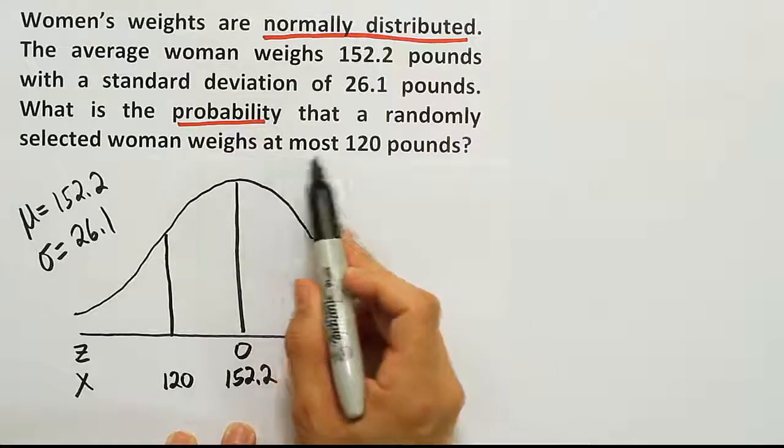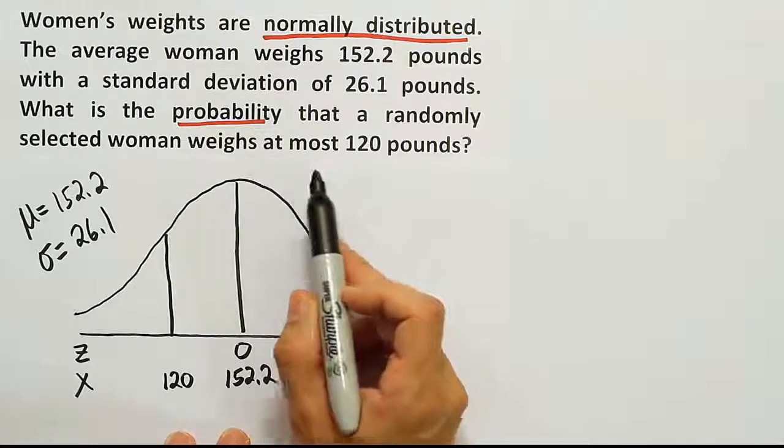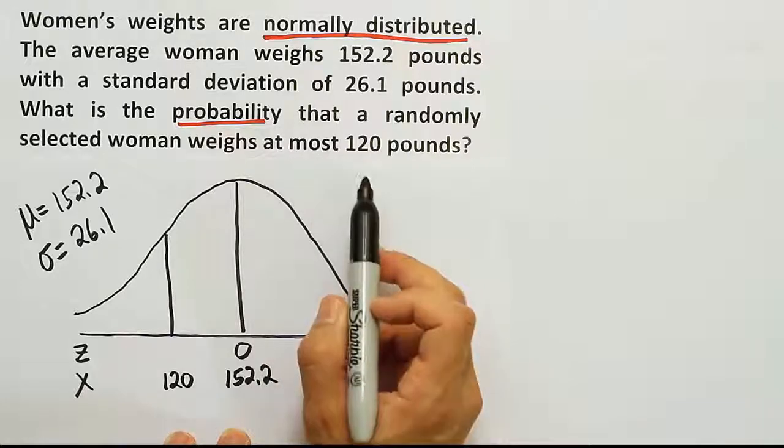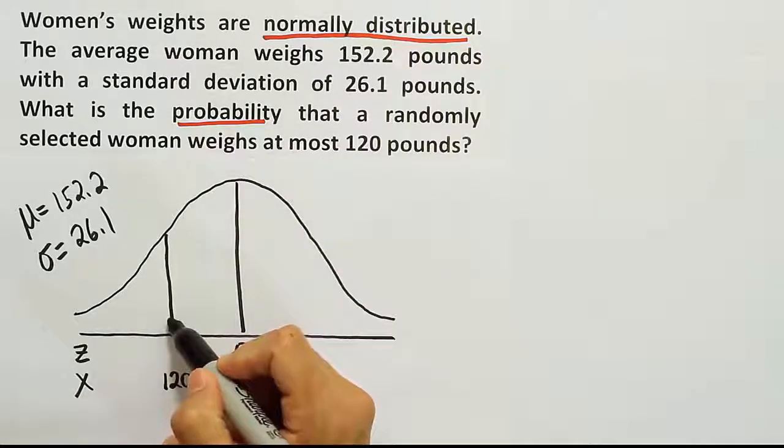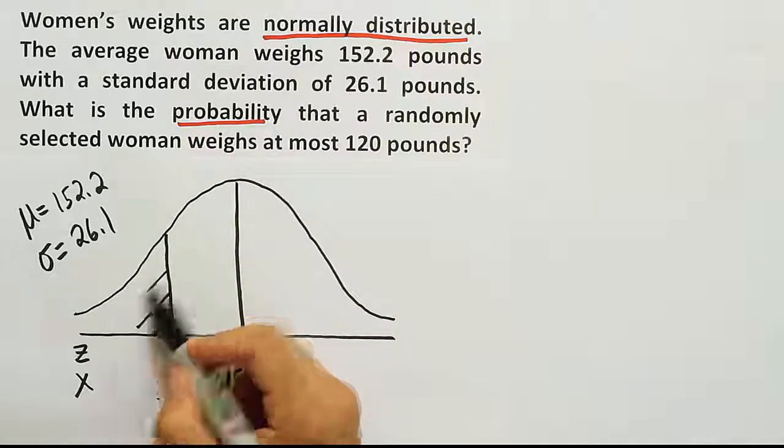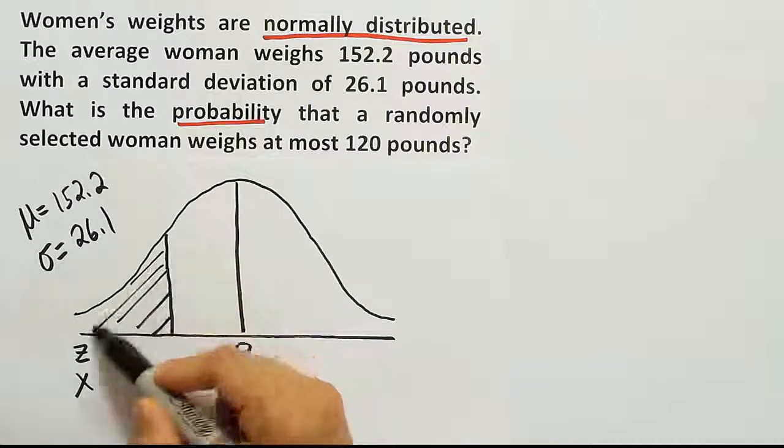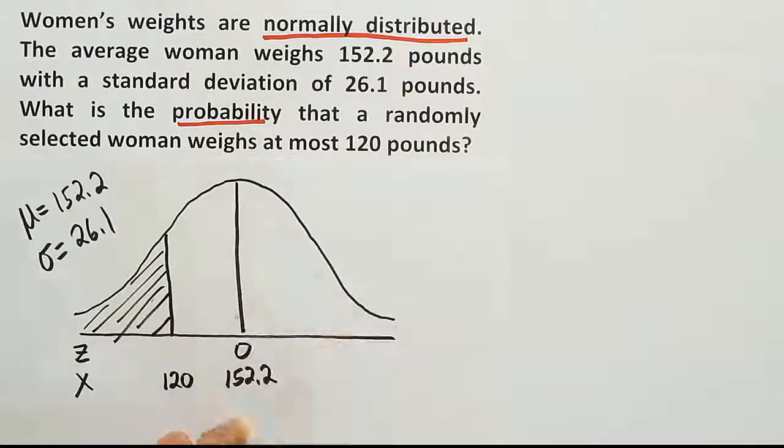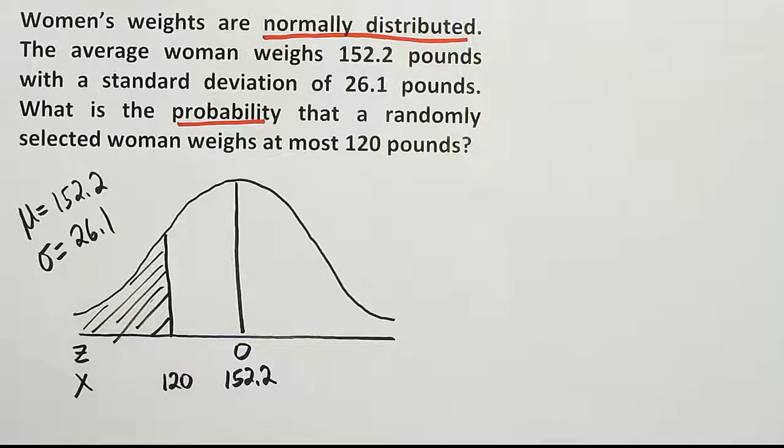When it says at most, at most is a maximum. Up to 120 pounds - at most would be that weight or less. So it's actually going to be the left that we will shade. We're looking for all the area to the left of 120.